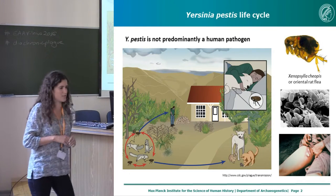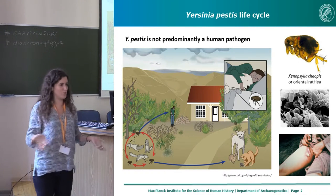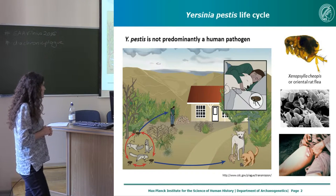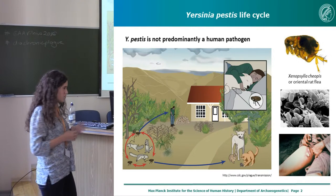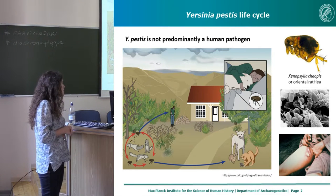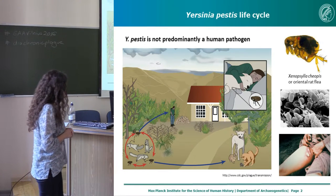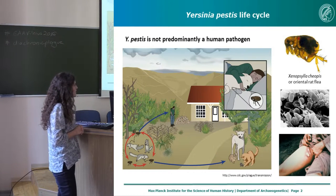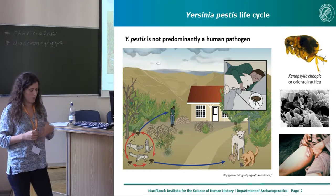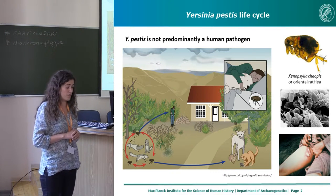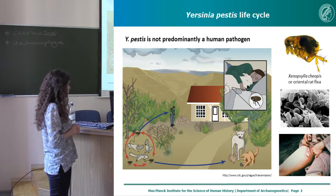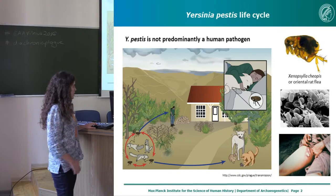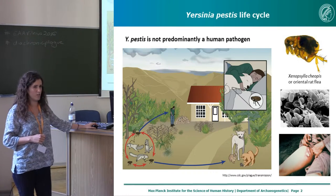Just some words on the ecology of plague. Plague is not predominantly a human pathogen; it's rather a pathogen that is maintained as an enzootic within sylvatic rodent populations, transmitted within these populations through the flea vector. But occasionally it can jump to other mammals that are more susceptible to disease, and therefore cause very drastic symptoms and mortality within only a few days.